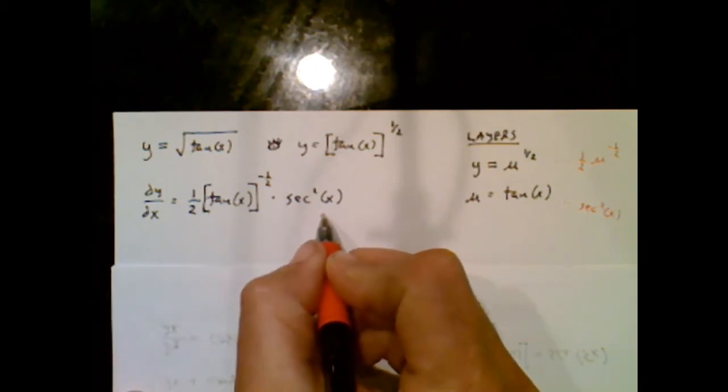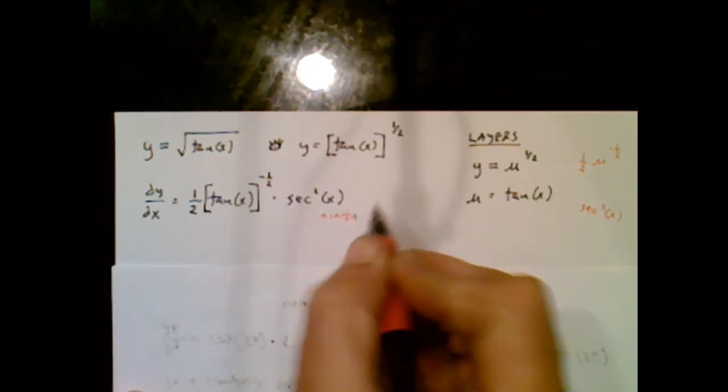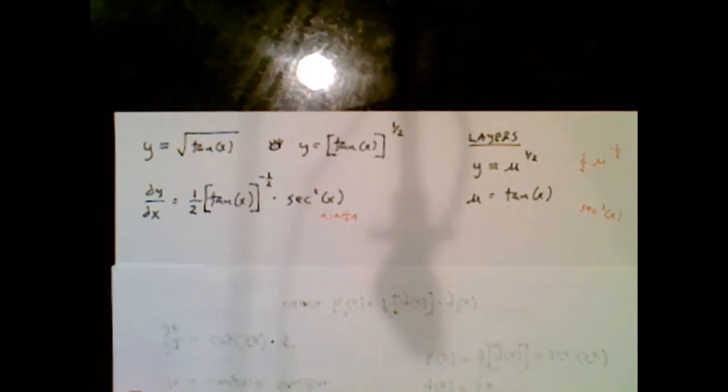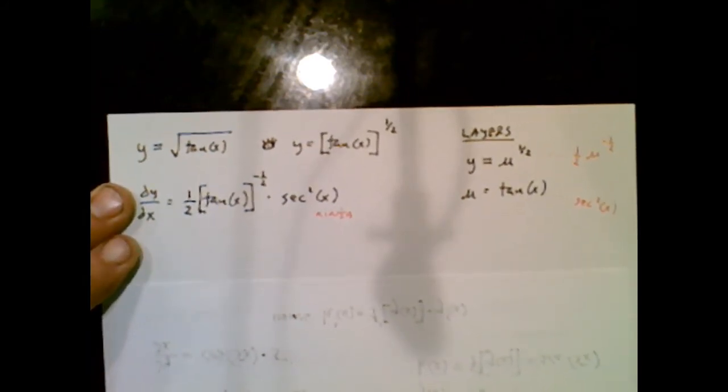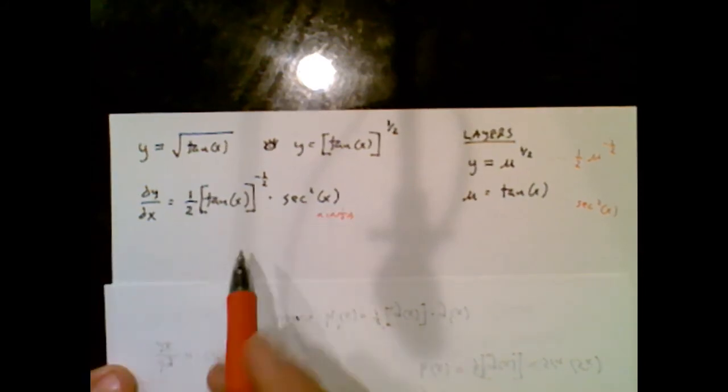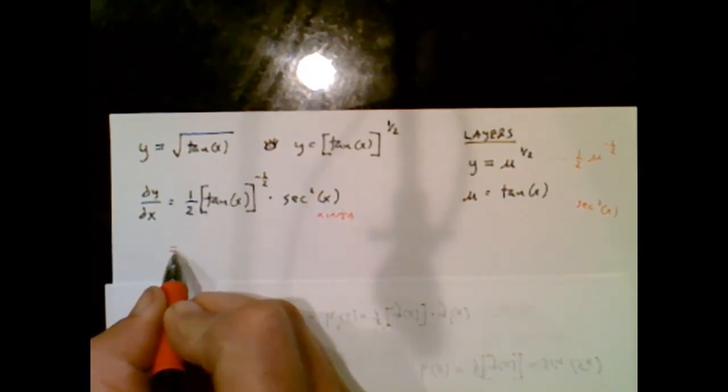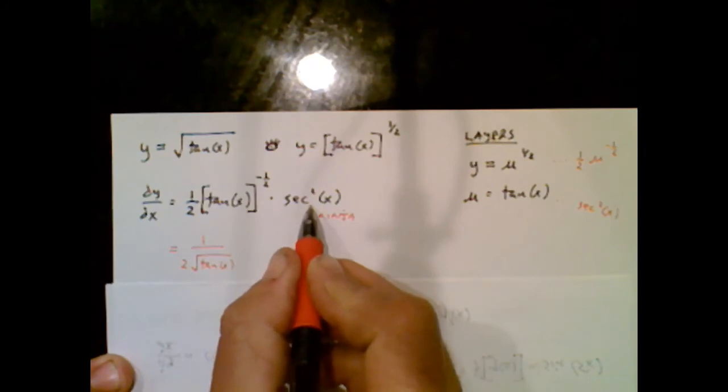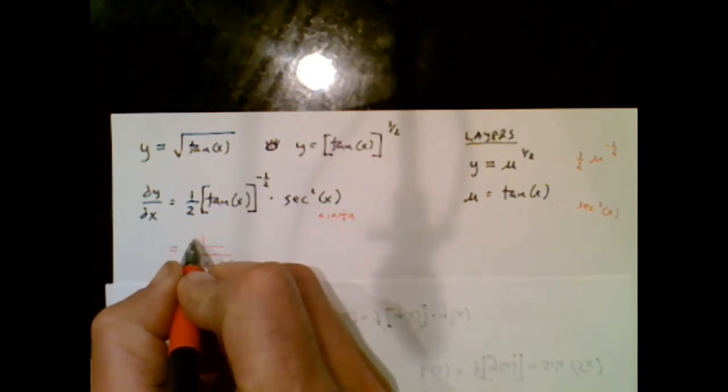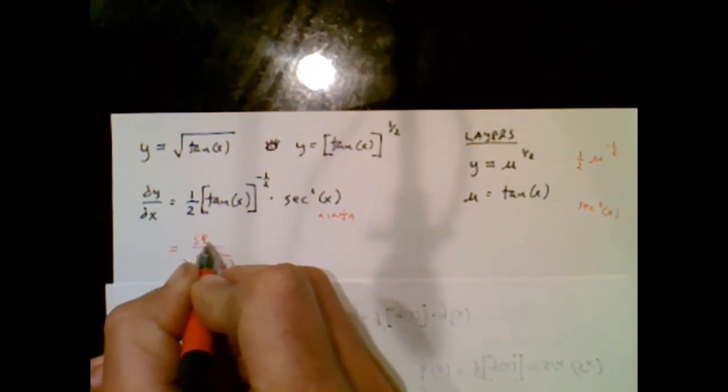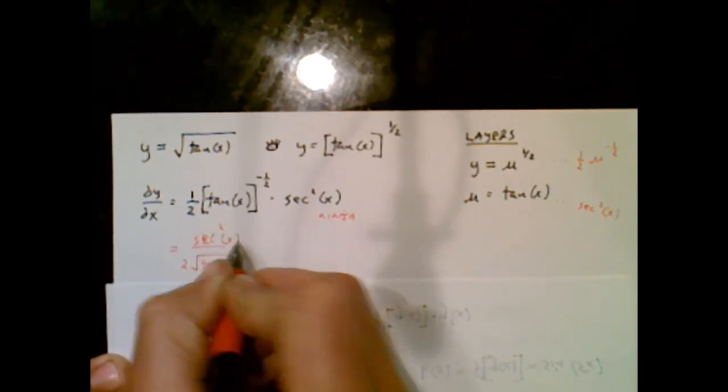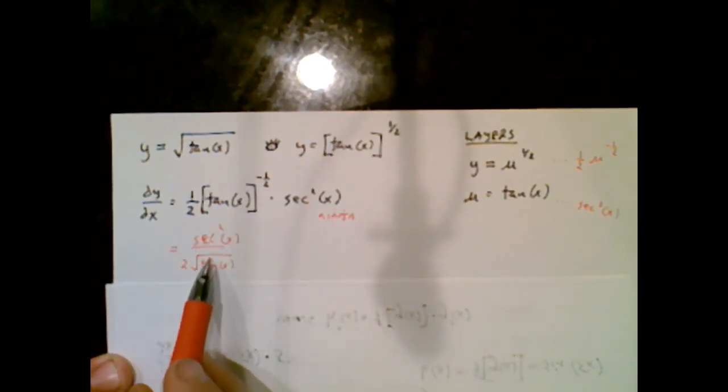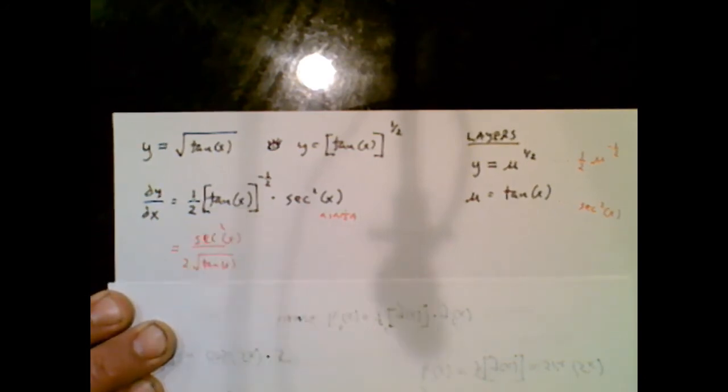And this is the part that people will easily forget. If you feel like it, go ahead and rewrite this because this is not very user friendly. So I could write this as one over two square roots of tangent of x. And then the secant squared x is in the numerator. So I could even do a little correction. This is just a more compact user friendly version of this. They're both correct.